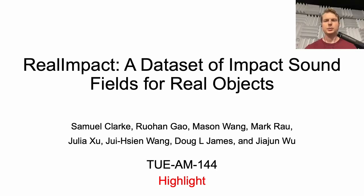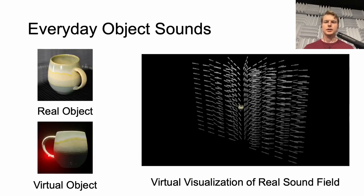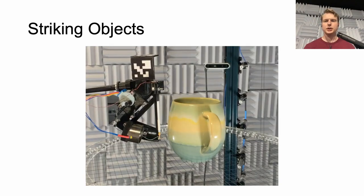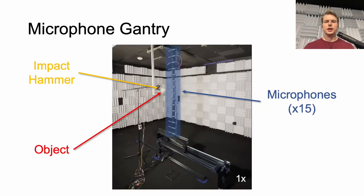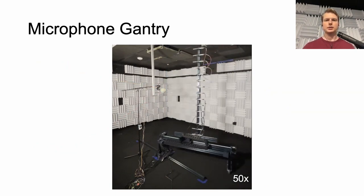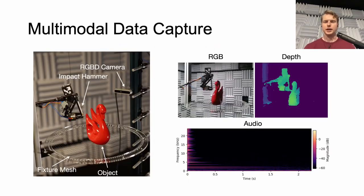We present Real Impact, a dataset of impact sound fields for real objects. Everyday objects each make unique sounds that are a product of their materials and geometry, as well as how they are contacted and where the listener is relative to the object. We carefully capture each of these aspects in a dataset of over 150,000 real recordings of impact sounds from 50 everyday objects. We place each object on a mesh in the center of an acoustically treated room and strike it repeatedly at a given point with an impact hammer. A gantry moves a column of microphones to different positions relative to the object between each hammer strike, allowing us to capture a sound field for the object. We also mount an RGBD camera to the gantry to capture images of the objects from each position for visual acoustic tasks.